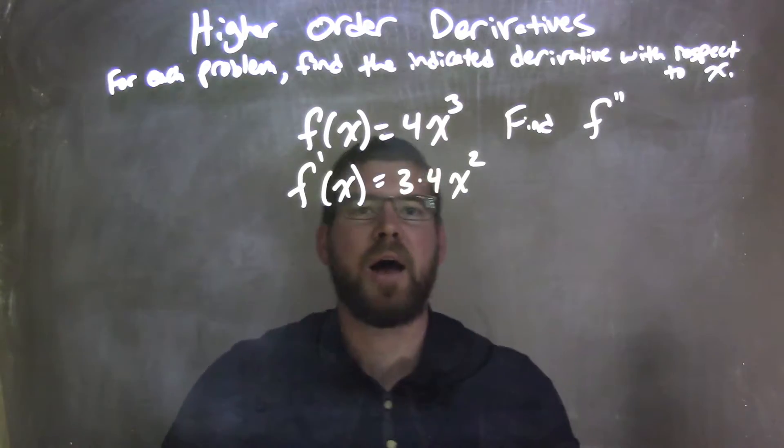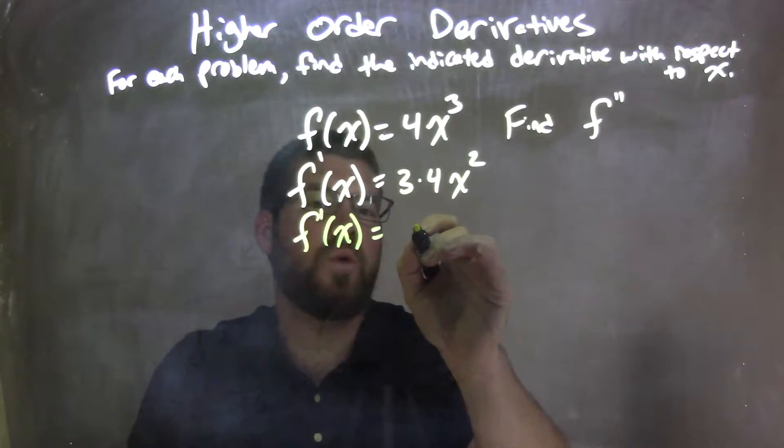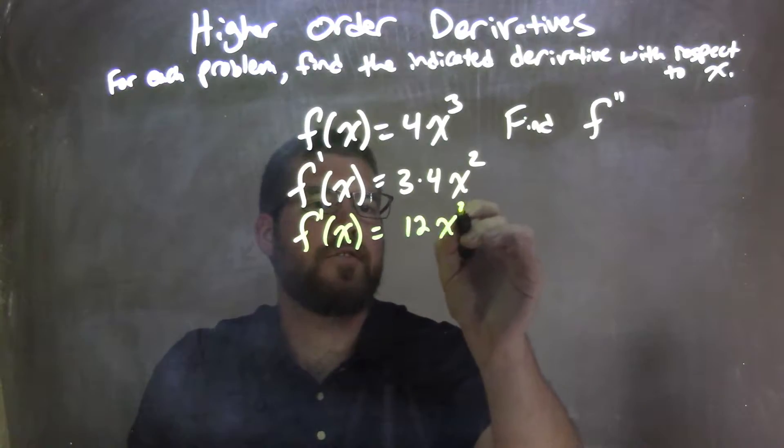Now from there, I can simplify that. So f prime of x is equal to 3 times 4, which is 12, x squared.